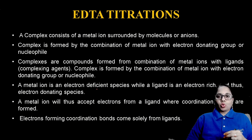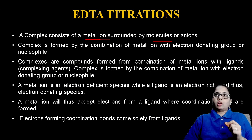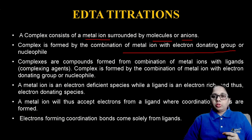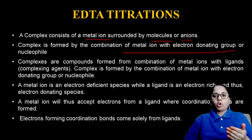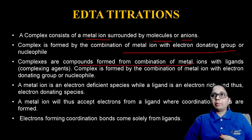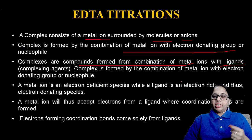In EDTA titration, a complex consists of a metal ion surrounded by molecules or ions. This complex is formed by the combination of a metal ion with electron donating groups, which are also nucleophiles. Complexes are compounds formed from the combination of metal ions with ligands. Ligands are the electron donating groups.